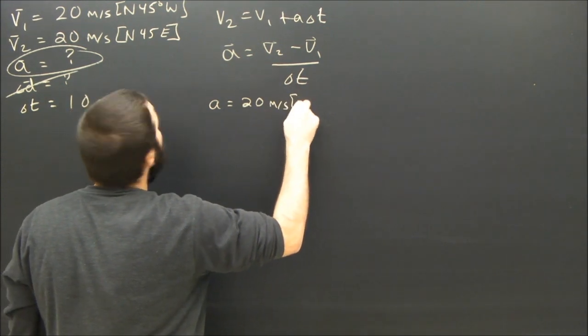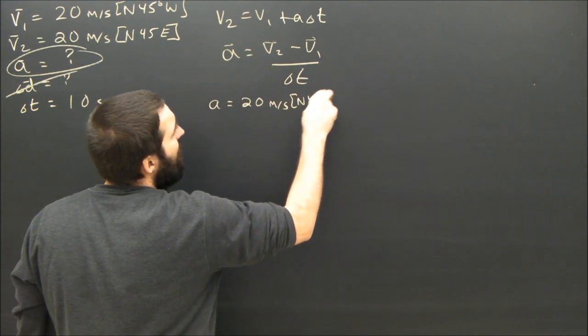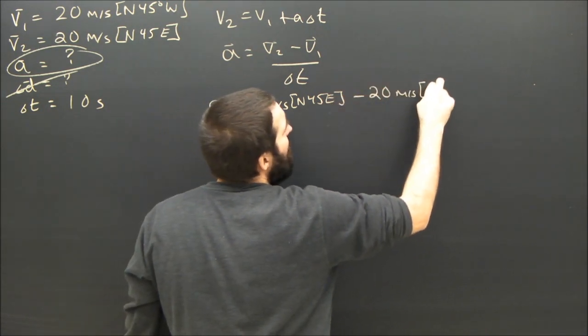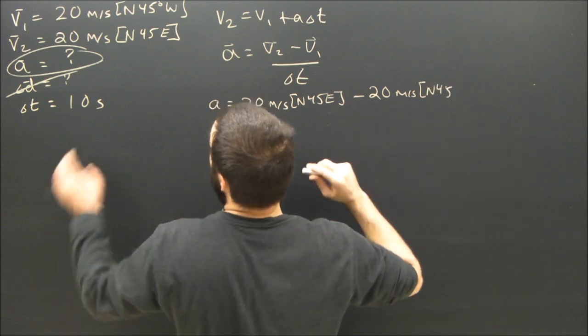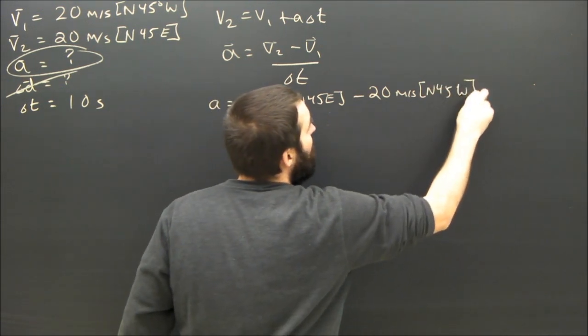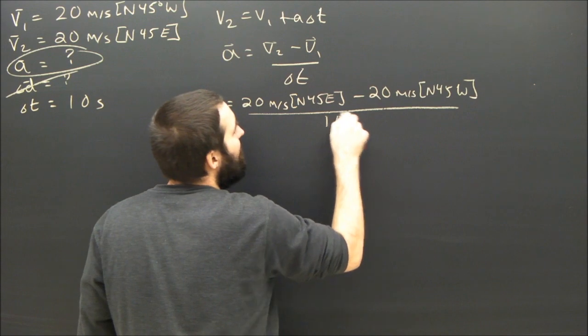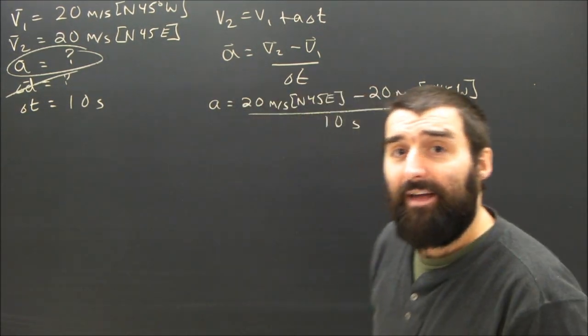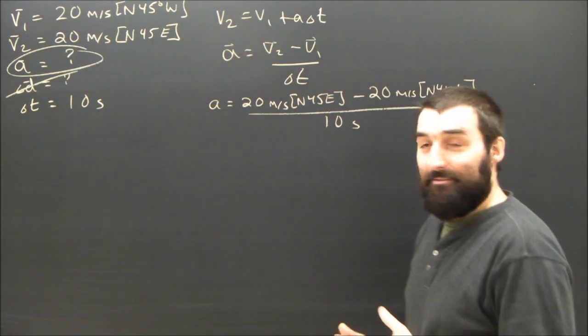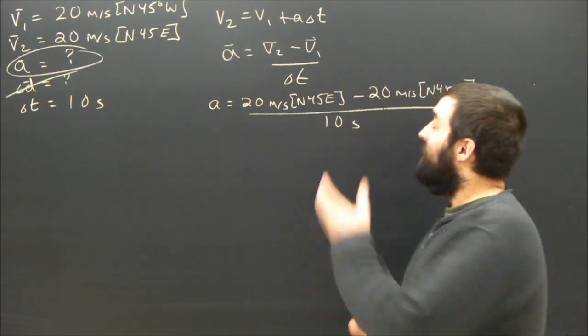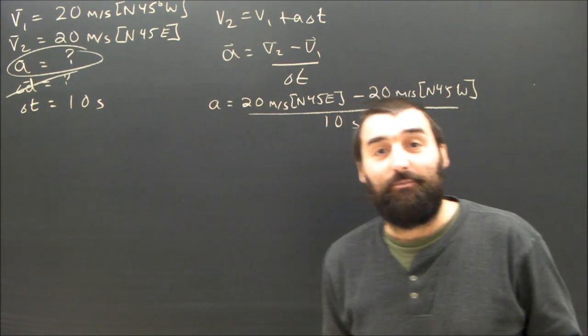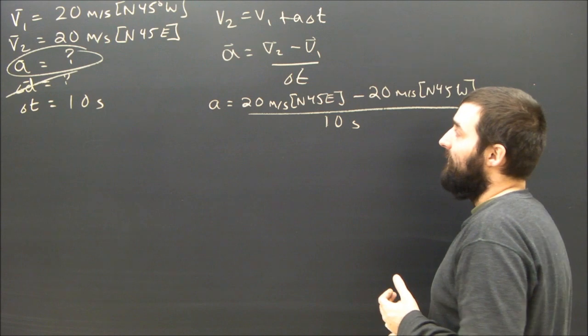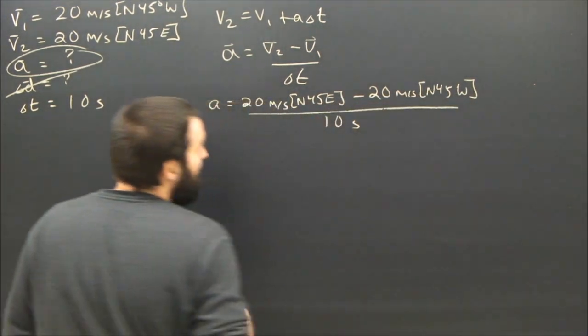I'm going to be careful and I'm going to include the directions. So 20 meters per second north 45 east minus 20 meters per second north 45 west, all divided by 10 seconds. I've learned how to add vectors and to subtract them. I know that 20 minus 20 does not equal zero because we're now in vector math land. We've got to be a little more careful.